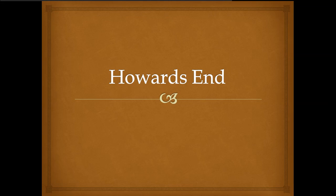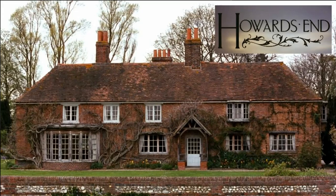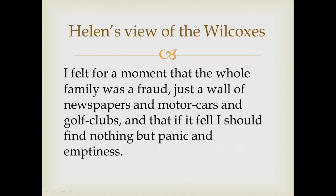I'll start with the plot of Howard's End. What are the characters trying to do? How are they responding to their circumstances? Well, Helen seems to want an engagement with Paul Wilcox and then just as quickly not want it. This immediately raises the question of what is a respectable woman to do in England in 1910. Should she give herself away? Should she marry herself off to some red-blooded eligible bachelor from the landed gentry? She explains very clearly why she didn't want to go through with this: 'I felt for a moment that the whole family was a fraud, just a wall of newspapers and motorcars and golf clubs, and that if it fell, I should find nothing but panic and emptiness.'